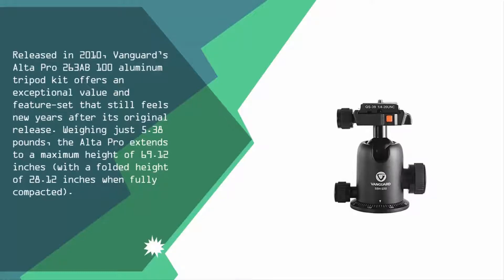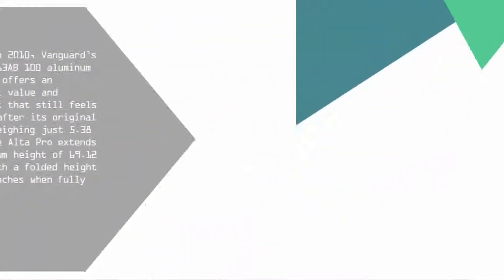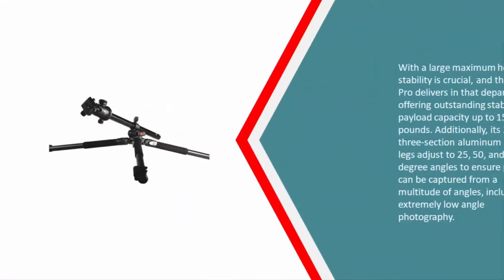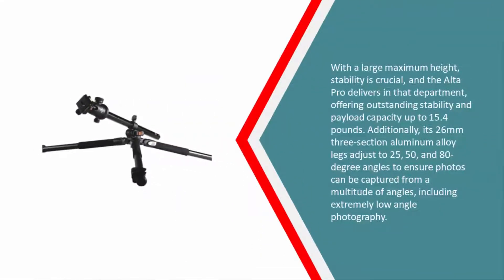Weighing just 5 pounds and 38 ounces, the Alta Pro extends to a maximum height of 69.12 inches with a folded height of 28.12 inches when fully compacted. With a large maximum height, stability is crucial.